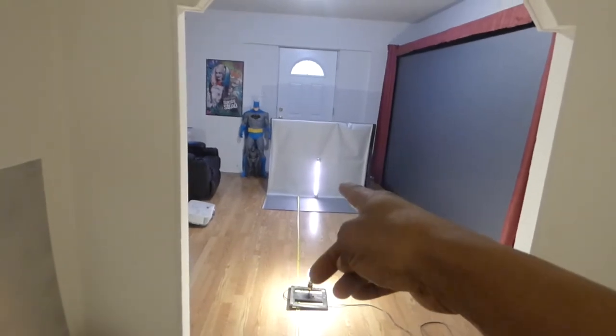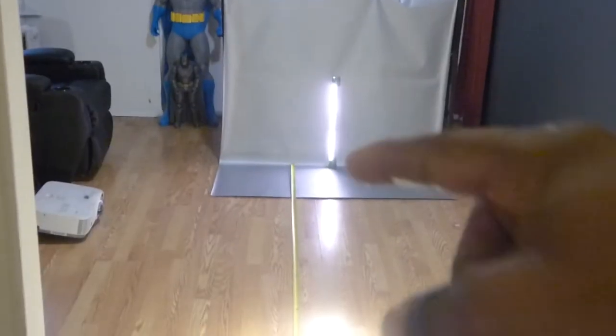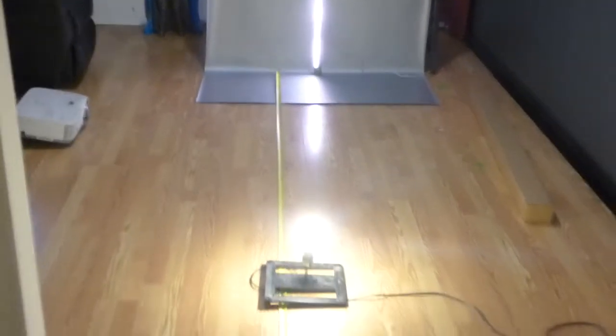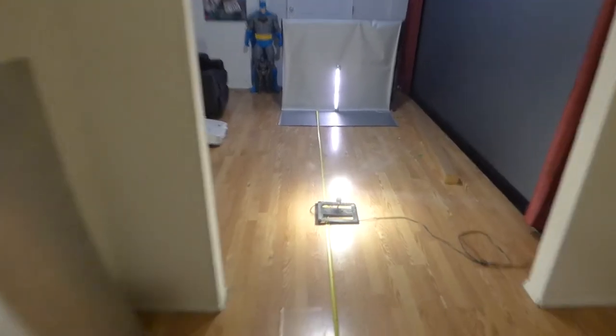Right over here, I have the 500-watt bar light. As you can see, how much light is coming off the screen. Look at that. It's just lighting up a line right there. In the middle, I have another 100-watt light. I'm going to show you why.